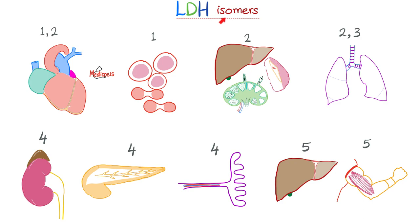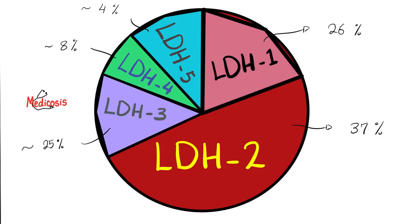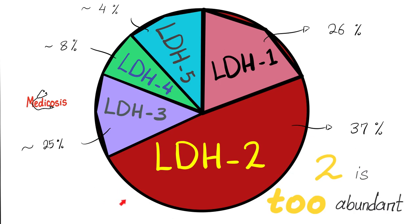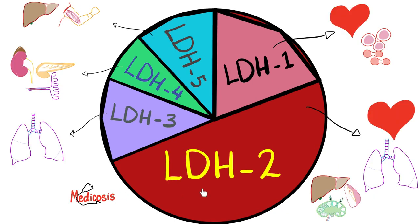There are subtypes of LDH. The heart has LDH1 and LDH2. Red blood cells have LDH1. Reticuloendothelial organs have LDH2. Normally, the most abundant LDH in serum is LDH2. LDH3 is in the lungs; LDH4 in the kidney, pancreas, and placenta; LDH5 in the liver and skeletal muscles.